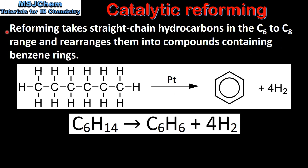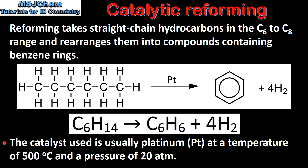Reforming takes straight chain hydrocarbons in the C6 to C8 range and rearranges them into compounds containing benzene rings. In this example we start with C6H14, which is hexane, a straight chain hydrocarbon, and the products of the reaction are C6H6, which is benzene, and H2, which is hydrogen gas. The catalyst used is usually platinum at a temperature of 500 degrees C and a pressure of 20 atmospheres.